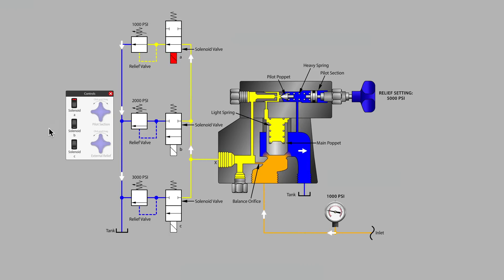...what we find out is that pilot flow now occurs through that top branch. It ceases to flow through the main pilot because that pilot is set to 5000. Pilot oil has found a path of least resistance...